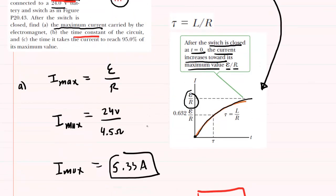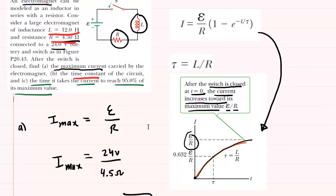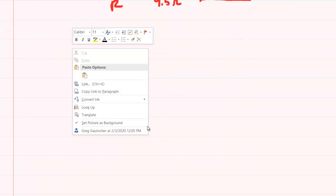Part C is perhaps the trickiest. It says to determine the time it takes the current to reach 95% of its maximum value. For that, we're going to have to use this equation. So let's copy and paste this down below for part C.